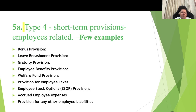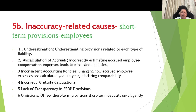Type 4 — short-term provisions, employees-related. Examples include bonus provisions, leave encashment provisions, gratuity premium, employee benefit premium, welfare fund premium, provision for employee taxes, employee ESOP (employee stock option provisions), accrued employee expenses, and any other employee liabilities.